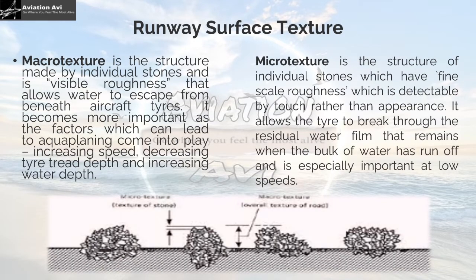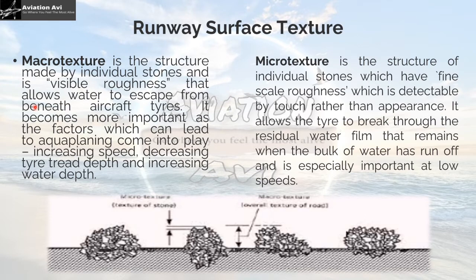One very important thing which governs the friction value is the runway surface texture, which is of two types: macrotexture and microtexture. A runway surface may seem smooth, but when you zoom in or view it under a microscope, you find particles with inherent roughness. Macrostructure is the difference between the crest and the smooth trough of the surface. Macrotexture is the structure made by individual stones and is the visible roughness that allows water to escape from beneath the aircraft tires. It becomes more important as factors that can lead to aquaplaning come into play: increasing speed, decreasing tire tread depth, and increasing water depth.